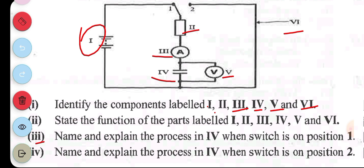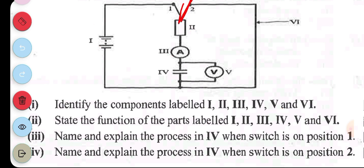Part iv: name and explain the process in the capacitor when the switch is on position two. When the switch is on position two, the circuit path is changed, bypassing the battery and allowing the capacitor to discharge through the resistor and ammeter. The stored energy in the capacitor is released, causing current to flow until the capacitor is fully discharged. The voltage across the capacitor decreases to zero during this process.